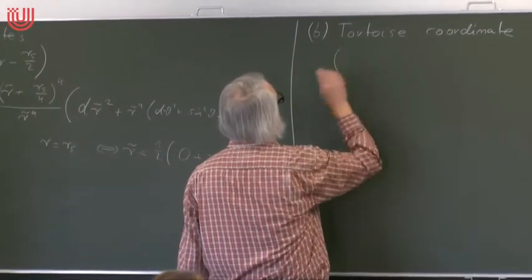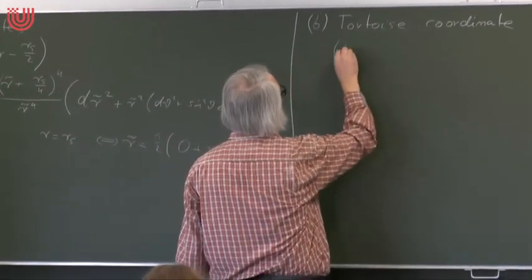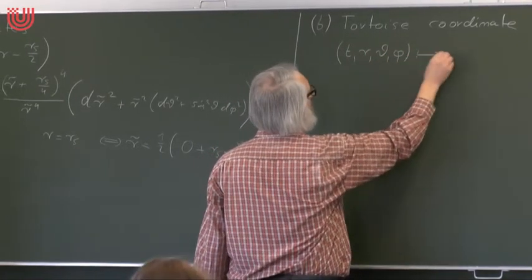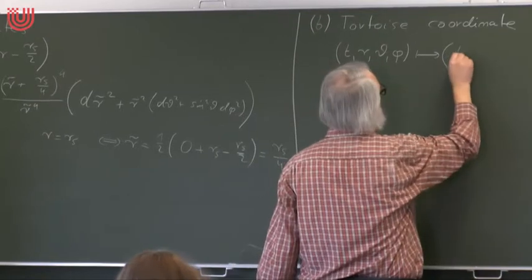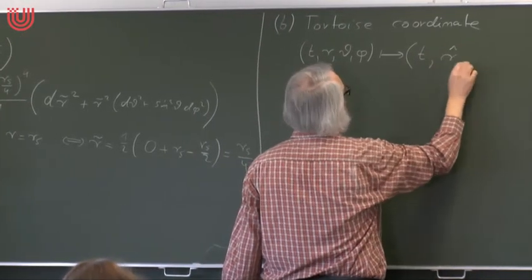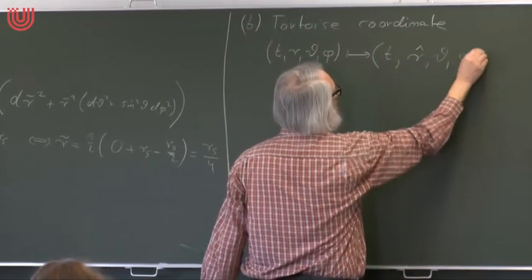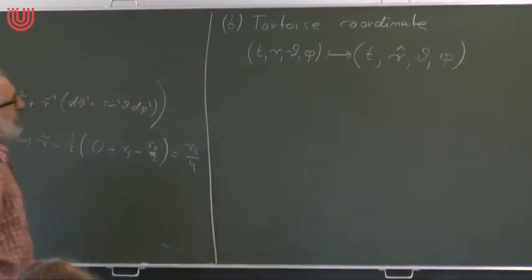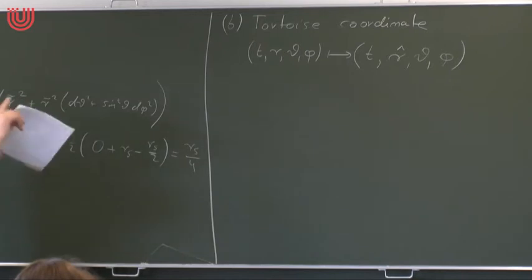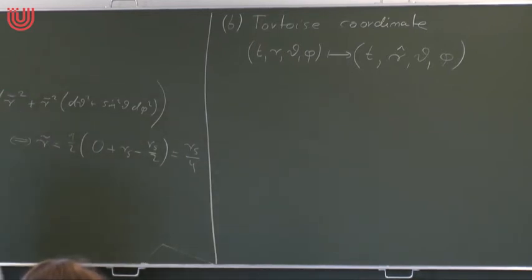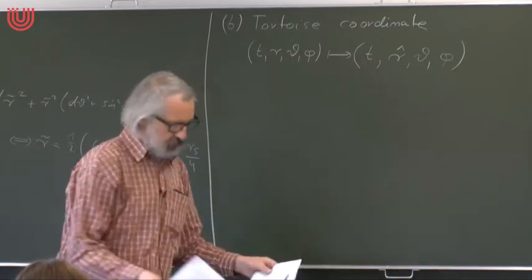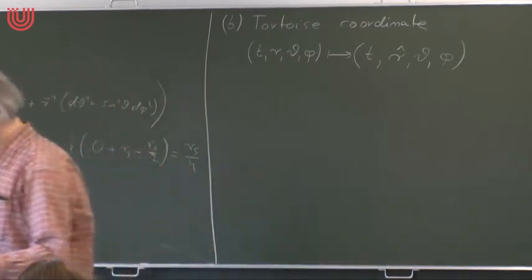Again it's a transformation where you transform just the r-coordinate. We get a new coordinate I denote r-hat — in the literature it's often denoted r-star, but I use r-star for the radius of my central object, so I avoid that notation.